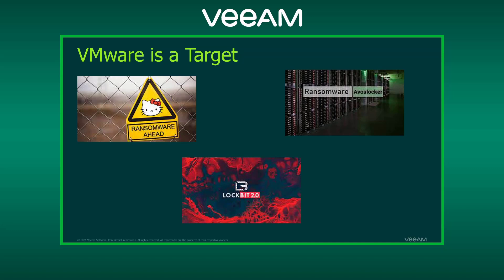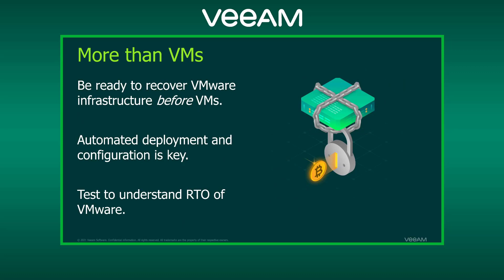VMware has a great ransomware resource center — just Google 'VMware ransomware' and it's the first result. We need to pay attention to VMware security guidance. More importantly, we need to be able to recover more than just VMs. We need to recover that VMware infrastructure before we can recover any of the encrypted VMs. If someone was in our VMware environment, it's trashed — we need to start over. That means automated deployment and configuration of these environments is key.